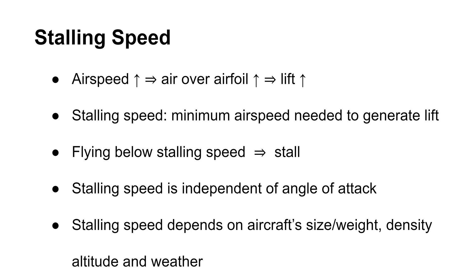The stalling speed varies with aircraft size, weight, density altitude, and weather. For instance, airplanes flying at high altitude will have higher stalling speeds. This is because air density is lower at higher altitudes. For this reason, many high-altitude airports have longer runways. The purpose of longer runways is to accommodate aircraft landing at higher speeds.